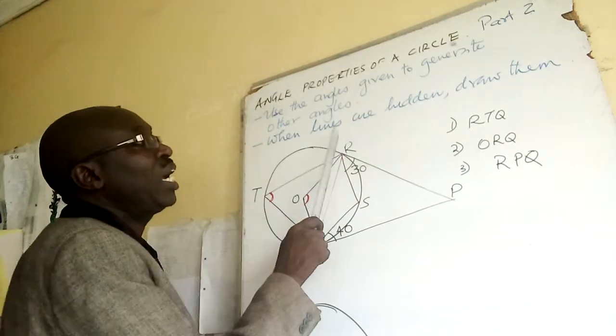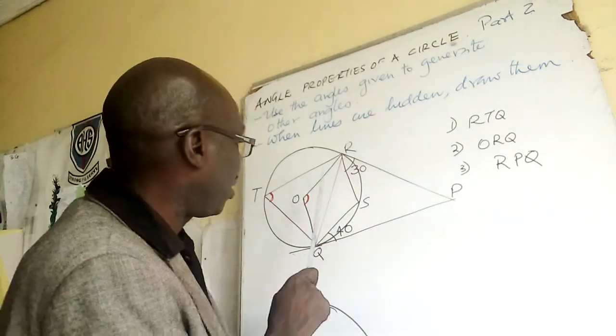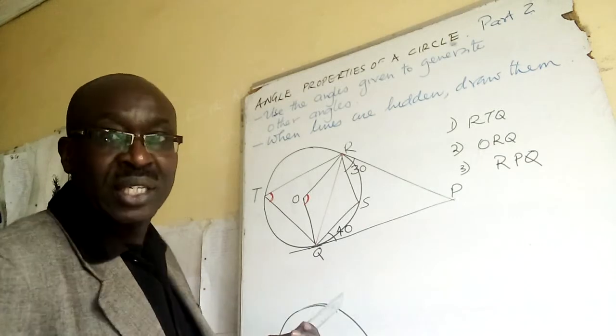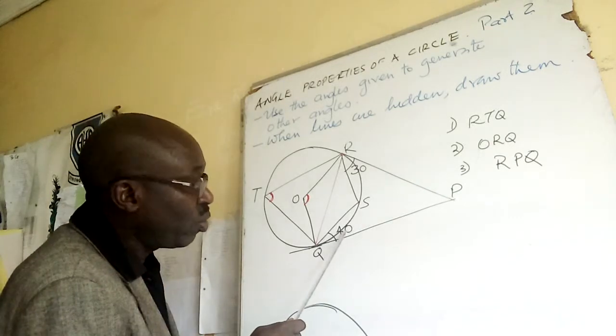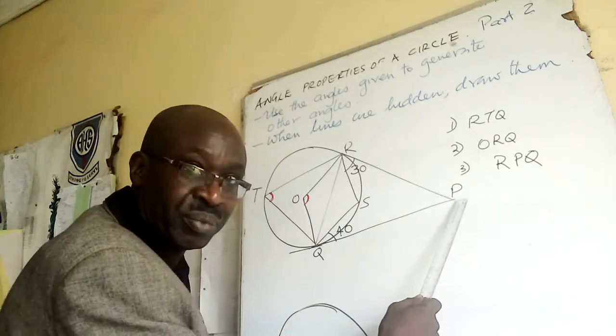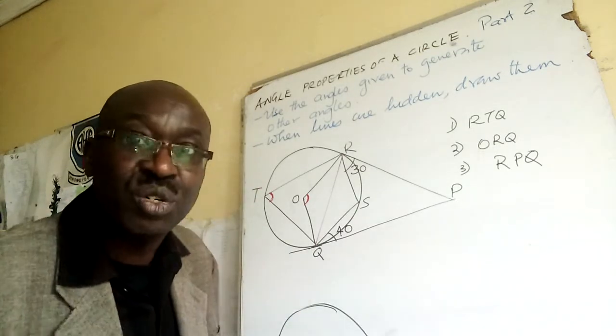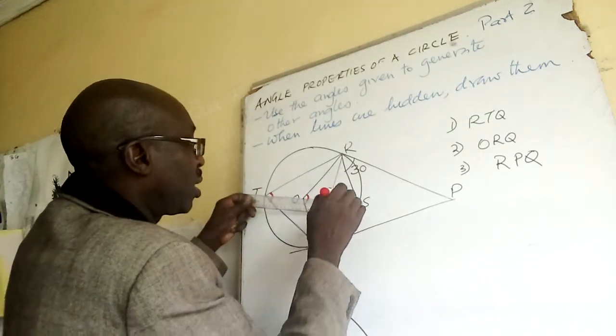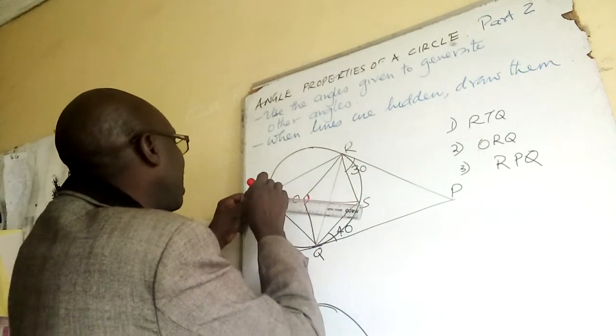So when lines are hidden, draw them. I've drawn it, it's clear. Then I know this angle is made by the chord and the tangent. So I can also introduce another one. I can introduce another one there.